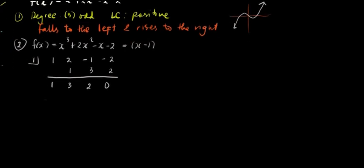Let's try negative 1. Bring down 1. 1 times negative 1 is negative 1. 3 minus 1 is 2. 2 times negative 1 is negative 2, and it's 0. So negative 1 is a zero. Therefore, x plus 1 is a factor. This is now linear, so we have x plus 2. The factored form of our function is (x-1)(x+1)(x+2).